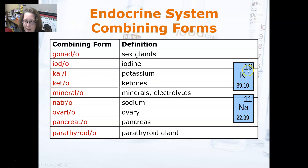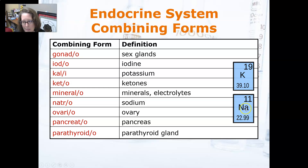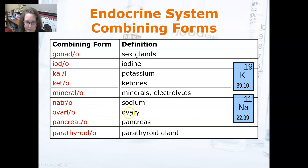Kalium is the Latin word for potassium — that's where the K symbol comes from. Keto means ketones. Mineral means minerals or electrolytes. Natrio means sodium; natrium is the Latin word, giving us the Na symbol. For example, high levels of sodium would be hypernatremia.